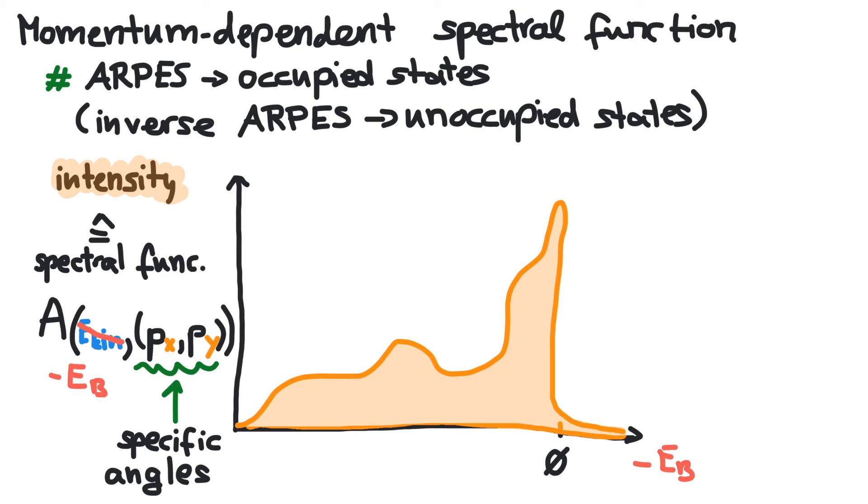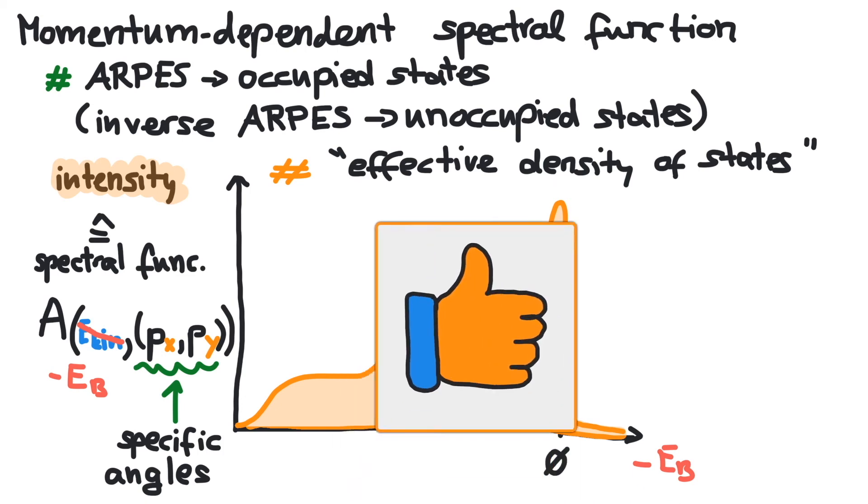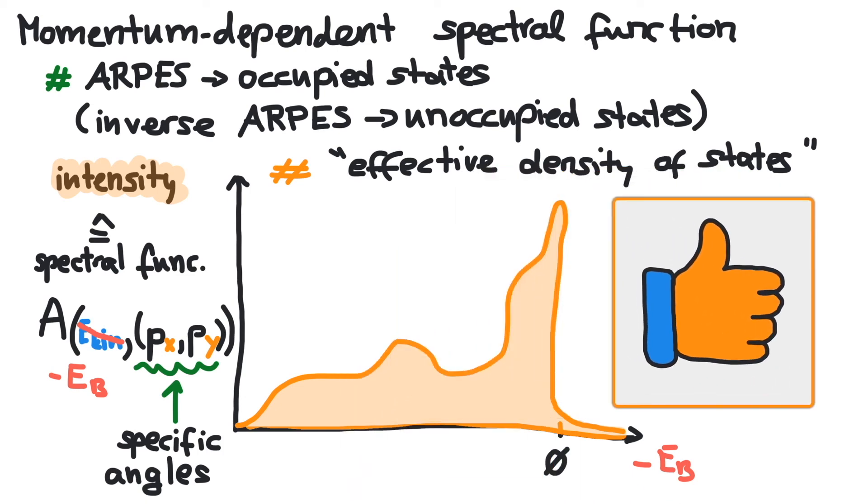It is necessary to include correlation effects due to electron-electron interactions or spin-orbit coupling. This effectively changes the density of states in a realistic material. In the theoretical discussion, the effective electronic density of states is referred to as spectral function. This is pretty much it for today. Thanks for watching, see you next time!